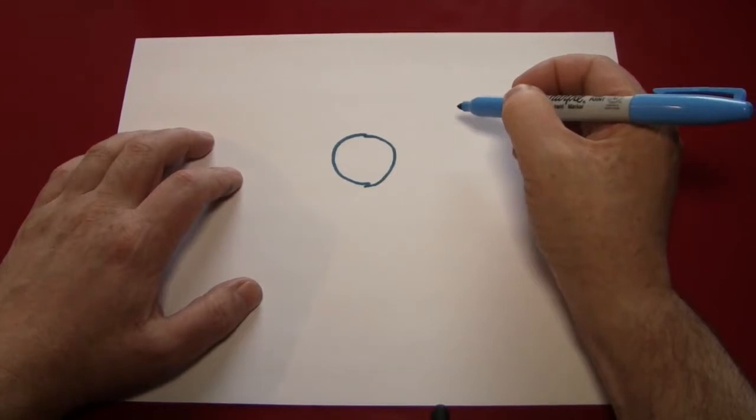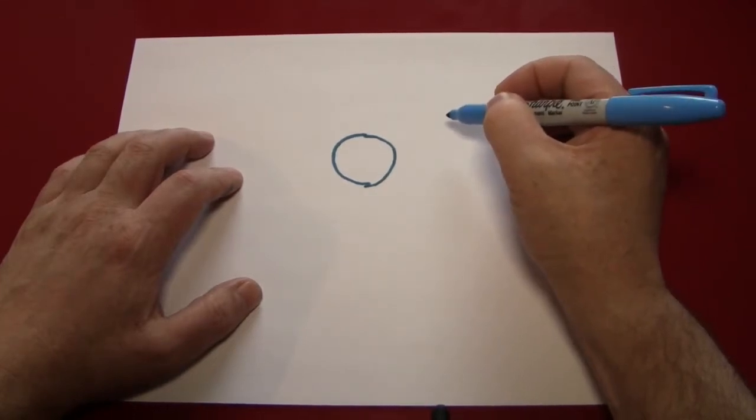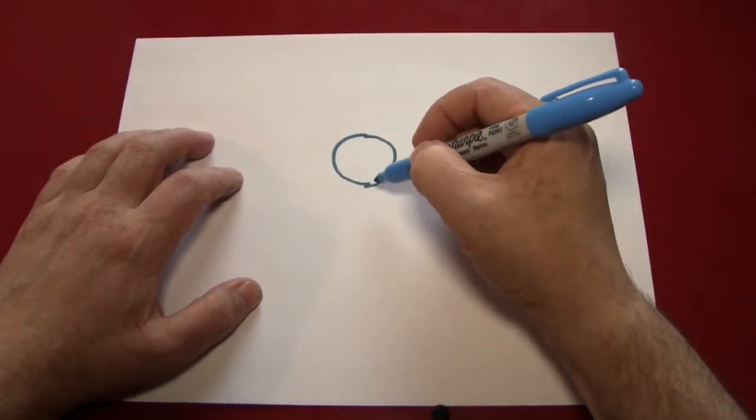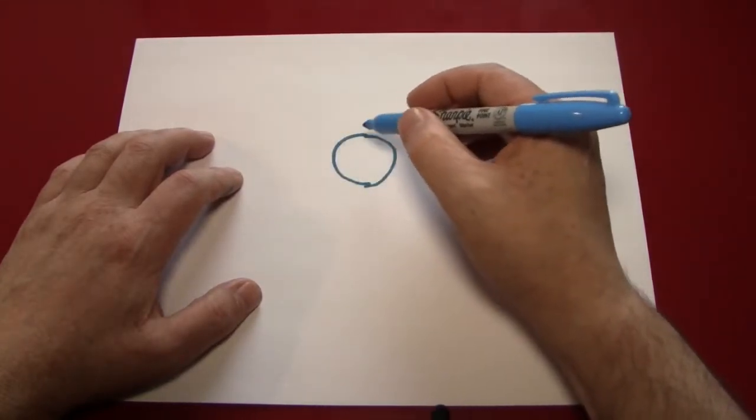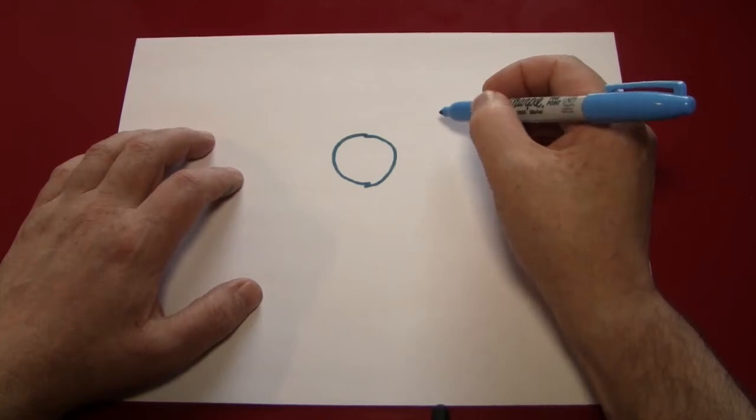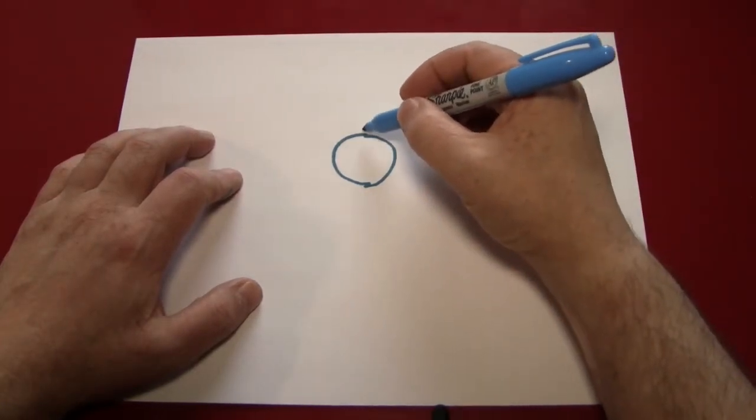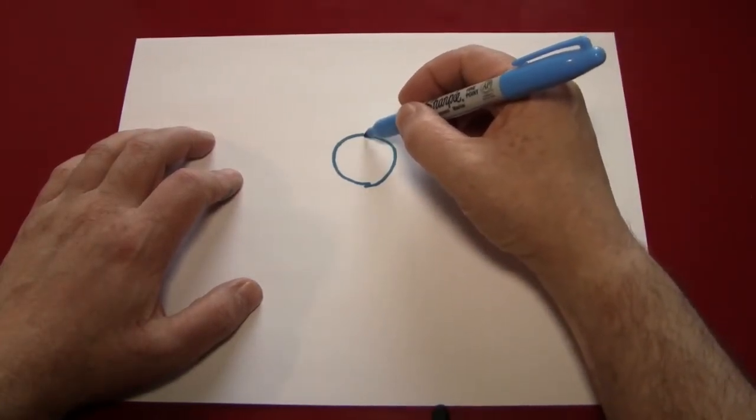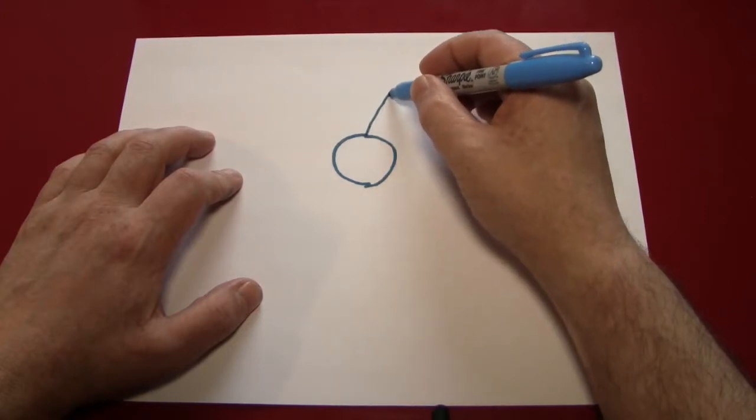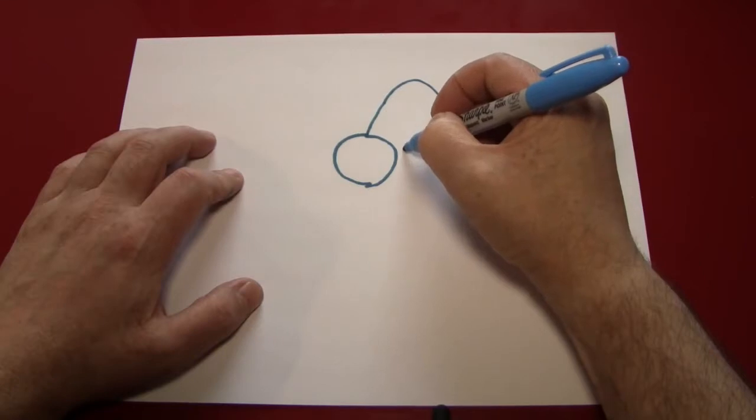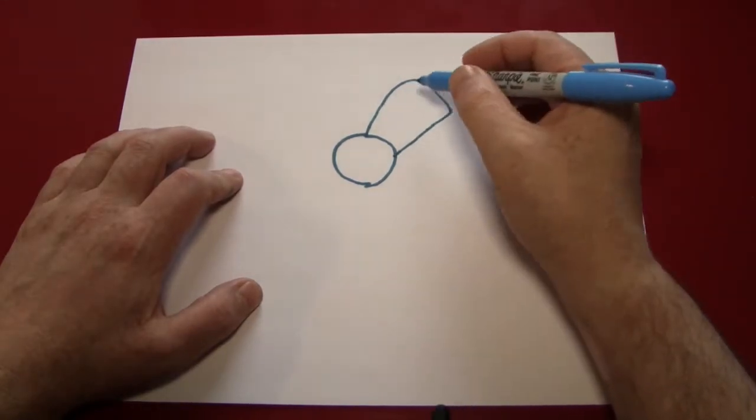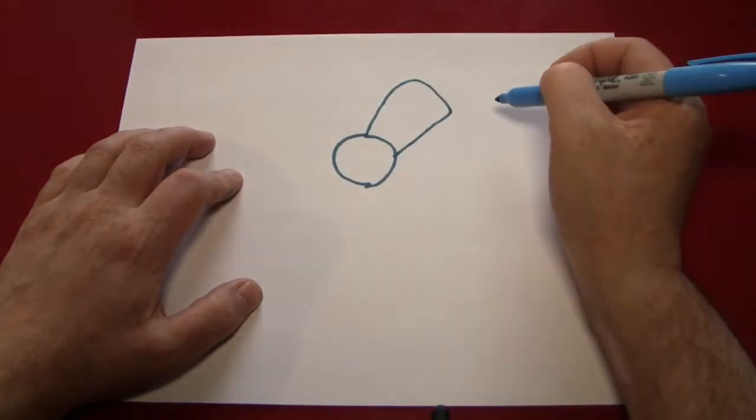Although counterintuitive, this works because you have more control bringing the pen towards you than pushing the pen away from you. Now let's make some petals, because a flower needs petals. And you can make these as large or as small as you like. But whichever size you pick for the first one, you should probably be consistent all around the flower.